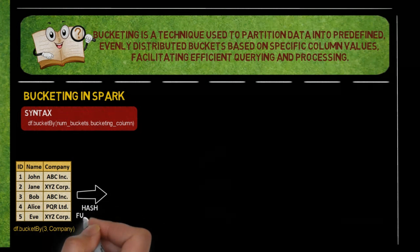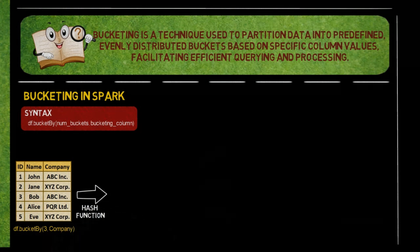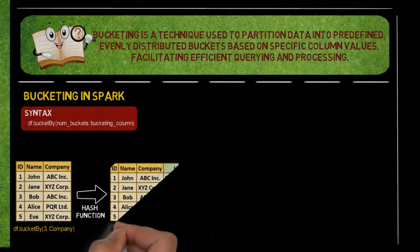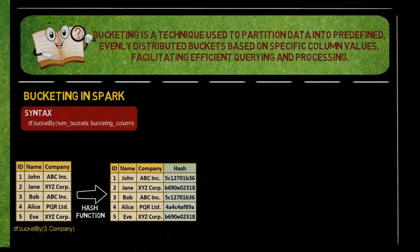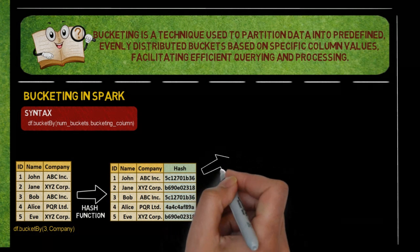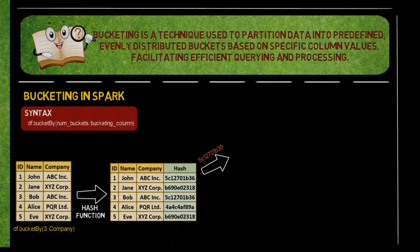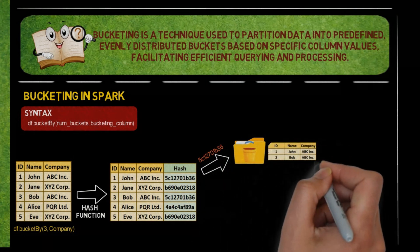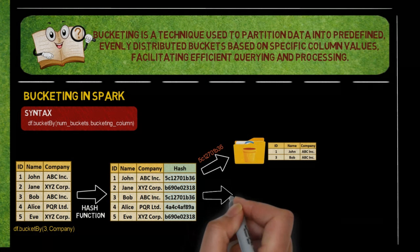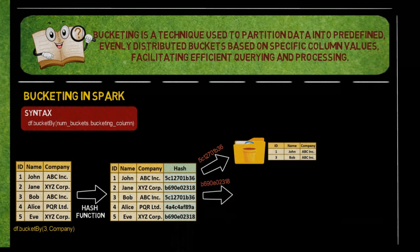Spark internally applies a hash function to the specified column — company in this case. The hash function computes a hash value for each unique value in the column. The hash values are used to distribute rows into buckets. Spark creates three buckets to hold the data, and each bucket corresponds to a hash value range.